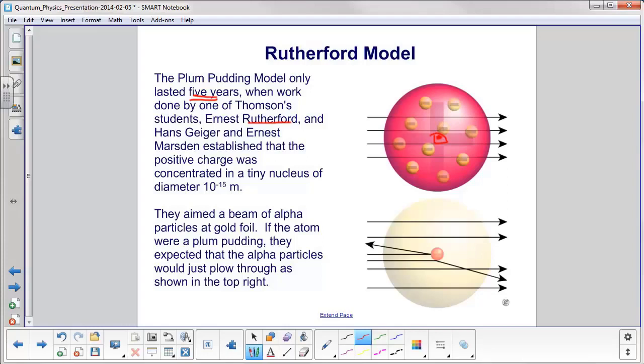The way they found this out is they aimed a beam of alpha particles at a piece of gold foil. If the atom were a plum pudding, and this positive charge here was dispersed throughout it, they would expect that these heavy alpha particles would just plow right through it and come back at the other side, just like this model right here. You can see the alpha particles. This is what was expected. They would just go right through and be measured on the other side.